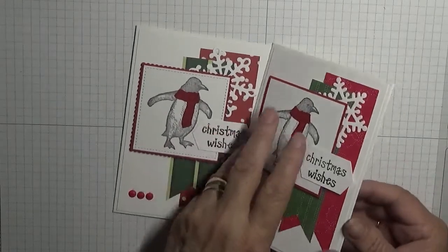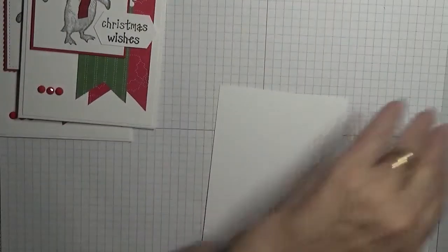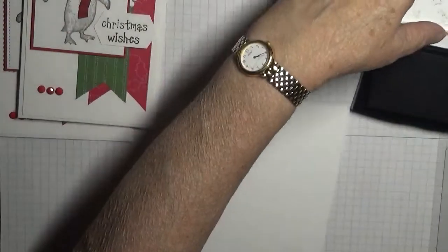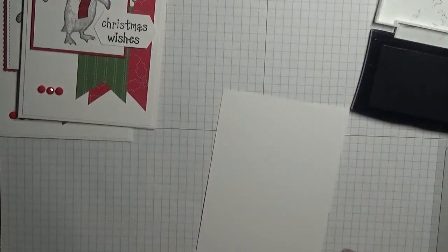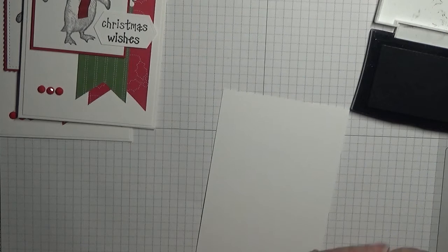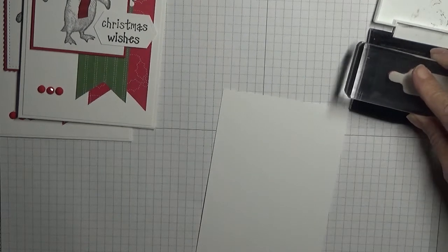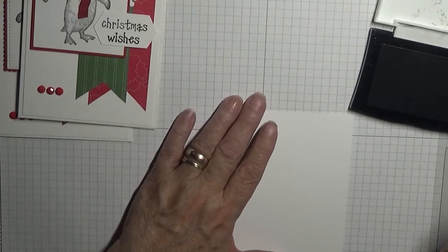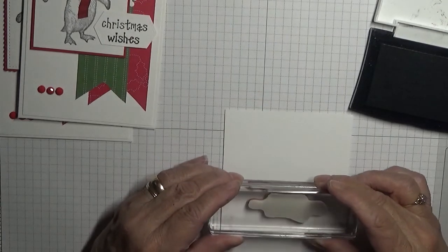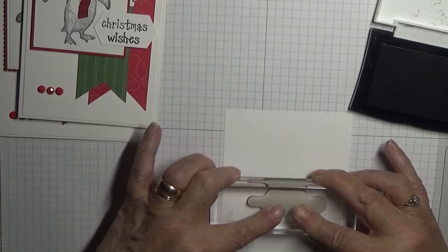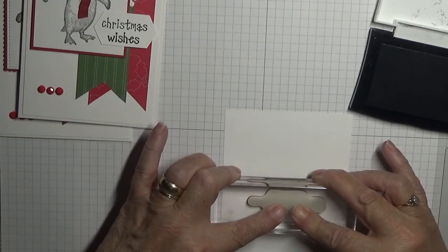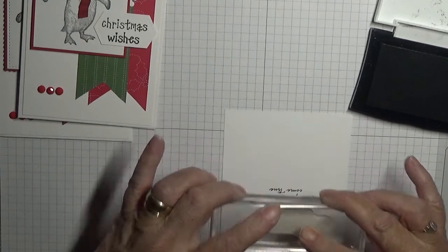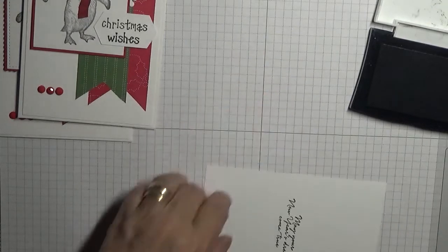So that would just leave us to stamp the inside. So with my Versafine let's put it on there straight. Now with this right now I can't tell if it's upside down or not, but it doesn't matter because I can just turn the page around.